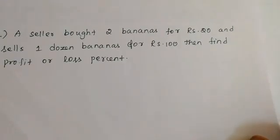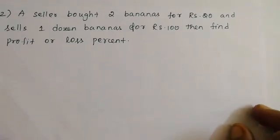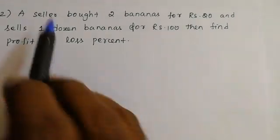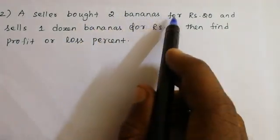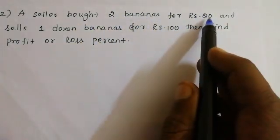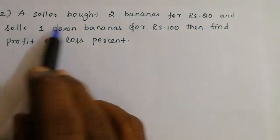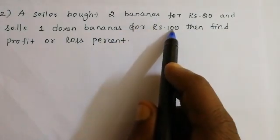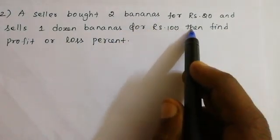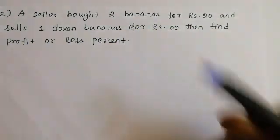So next question, question 5: A seller bought 2 bananas for Rs.20 and sells 1,000 bananas for Rs.100. Then find profit or loss percentage.